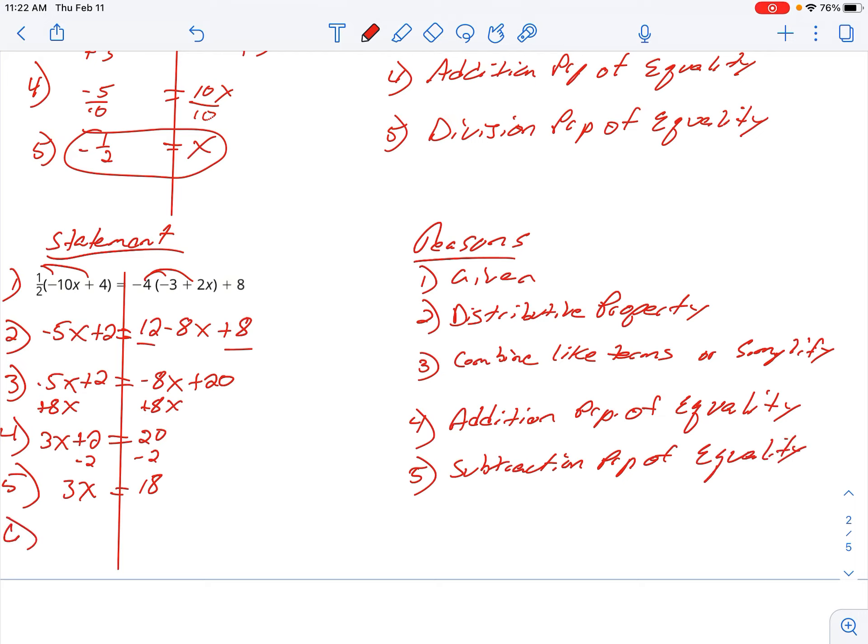And then lastly, get rid of that 3 by doing division. So x is 6. Again, that is my division property of equality. All right, I'm going to pause it there. Thank you.